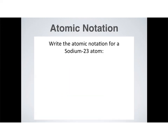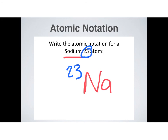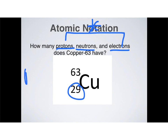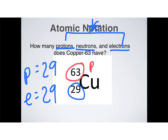Write the atomic notation for sodium-23. I need the symbol for sodium — that's Na. My 23 is the mass number, so I put it up top. Then I look up the atomic number of sodium, which is 11. So that would be the correct atomic notation for sodium-23. Finally, how many protons, neutrons, and electrons does copper-63 have? Protons and electrons are the same number — so 29 is both the number of protons and the number of electrons. For neutrons, mass number minus atomic number: 63 minus 29 gives 34 neutrons.